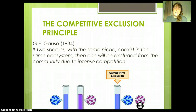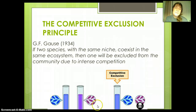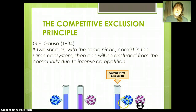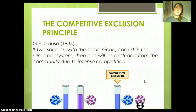This was first developed in paramecia. Paramecia are single-celled organisms, and it was found that these two species of paramecia, if they were in separate containers with the same environmental aspects, both were able to survive just fine. But if they were put into the same container with the same environmental aspects, then this blue one was able to survive and the other one died. That's competitive exclusion.